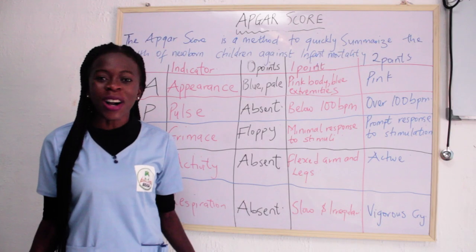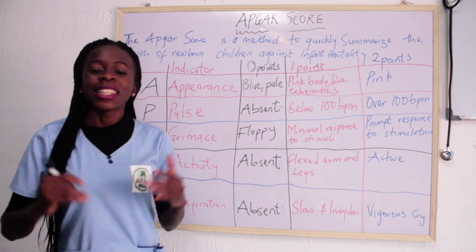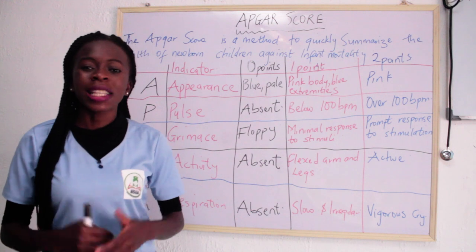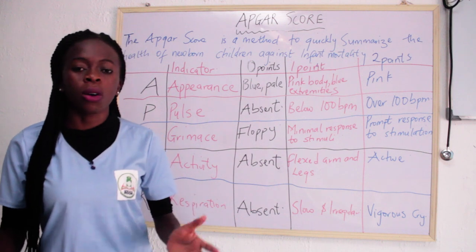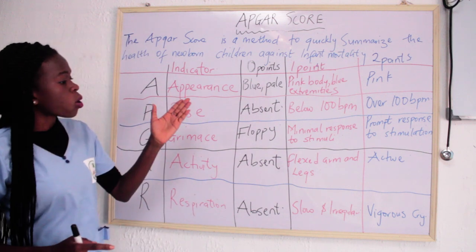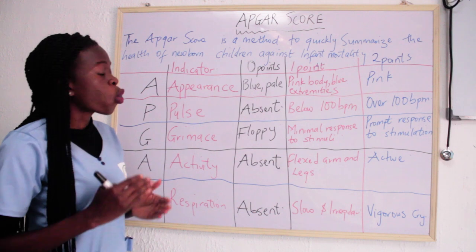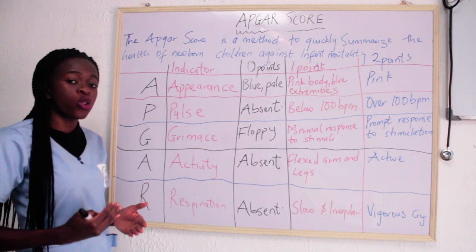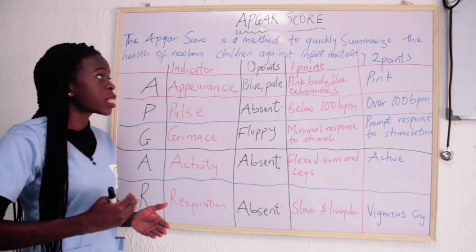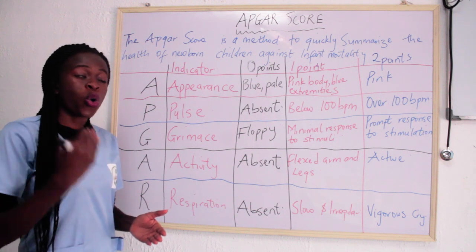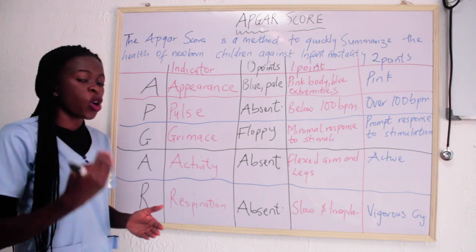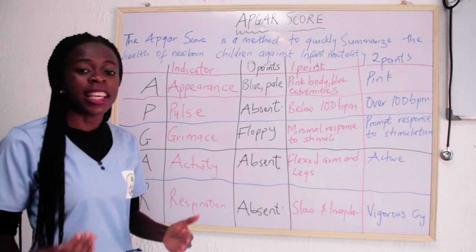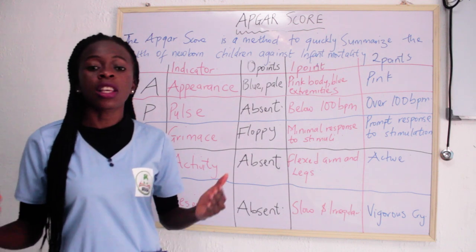Welcome back. Like I earlier said, today we're going to be talking about Apgar score. The Apgar score is a method to quickly summarize the health of newborn children — it's a method to quickly summarize the health of newborn children against infant mortality.